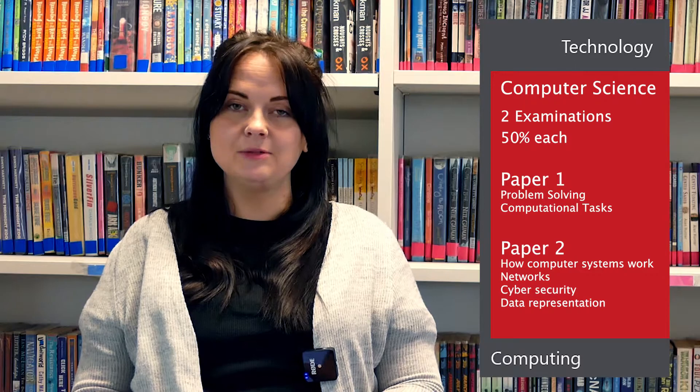Computer science is assessed with two written papers. Both of these papers are 50% of your final grade. The first paper covers problem solving activities and computational thinking tasks. The second paper is your theory content, covering how computer systems work, networks, cyber security and data representation.